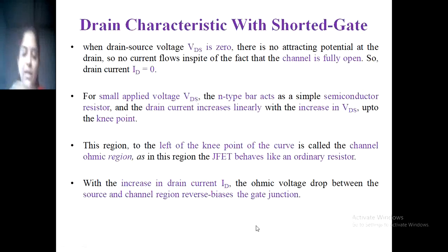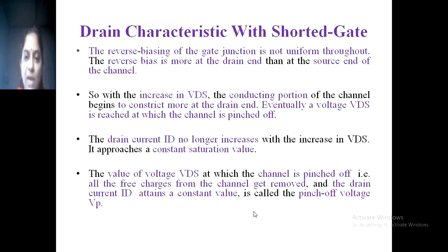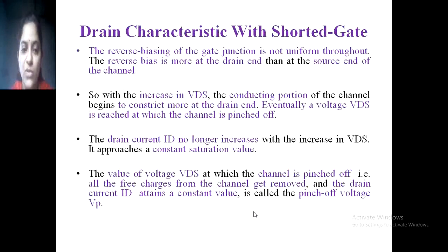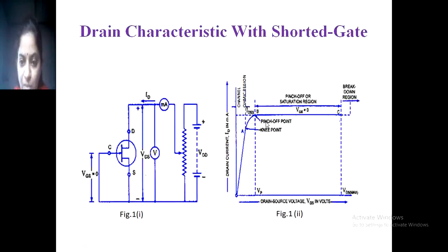With the increase in drain current ID, the ohmic voltage drop between the source and channel region reverse-biases the gate junction. This reverse biasing is not uniform throughout — the reverse bias is more at the drain end than at the source end. As VDS increases, the conducting portion of the channel becomes more constricted at the drain end. Eventually a voltage VDS is reached at which the channel is pinched off — that is the pinch-off point — where the drain current ID reaches its maximum, and that point is known as VP, the pinch-off voltage.